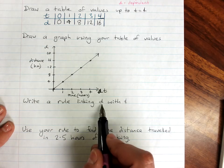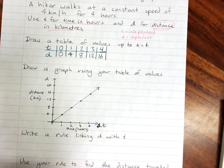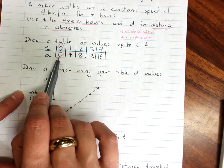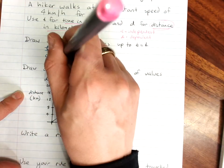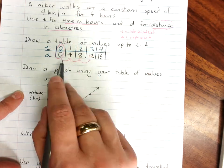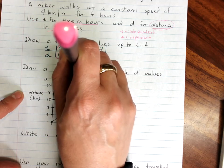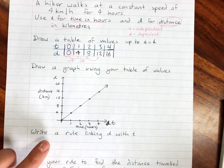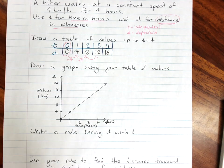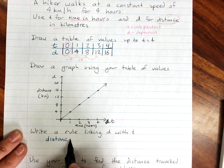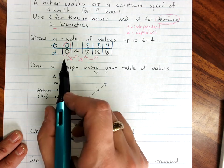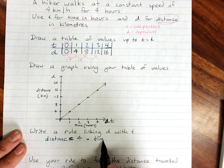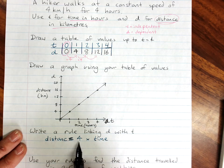Next request. Write a rule linking distance with time. Now if you're feeling very clever, you'll remember that the number on its own we get when X, or t in this case, is 0. It's going to be 0. And the number in front of the X is going to be the number that we go up or down by for the Y value. So that's going to be a 4. But let's get this sorted out taking a little more time. When you write your rule, you start with your dependent variable. And it's often easier if you start in words. Distance equals 4 kilometers for every hour. So that's 4 times time.